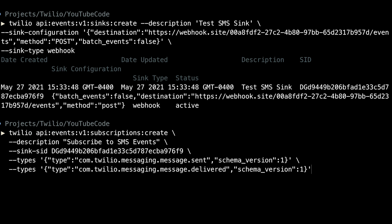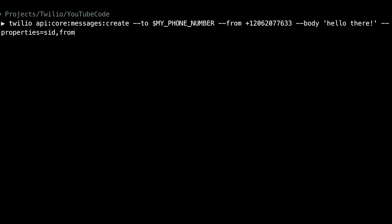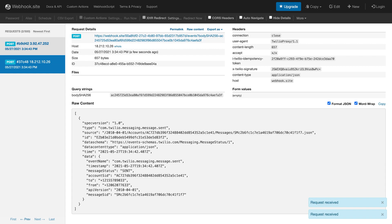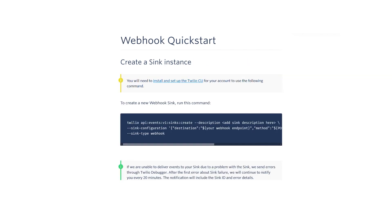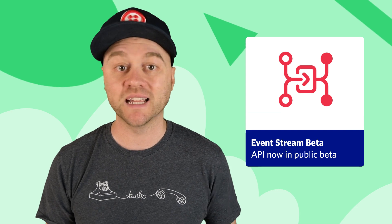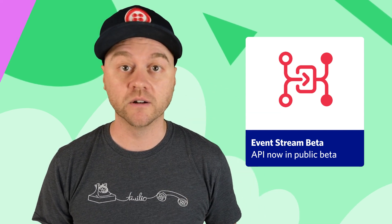This next command registers for the SMS sent and delivered events. Now, if I use the Twilio CLI to send a text message to my phone, we'll see the events pop up in our webhook tester. You can also set up Twilio Event Streams to work with Amazon Kinesis. We have quick starts for both the webhook method I showed as well as Amazon Kinesis — links are in the description below.